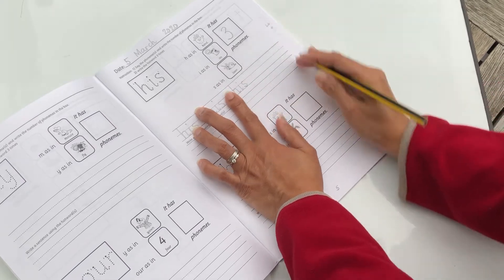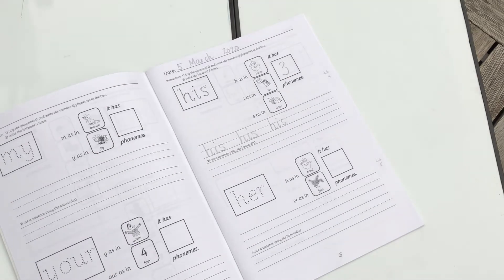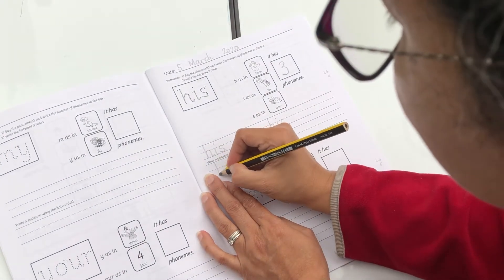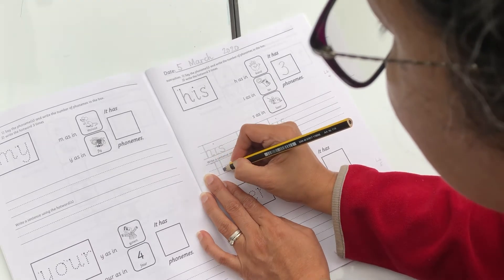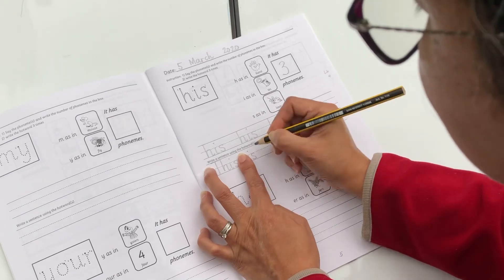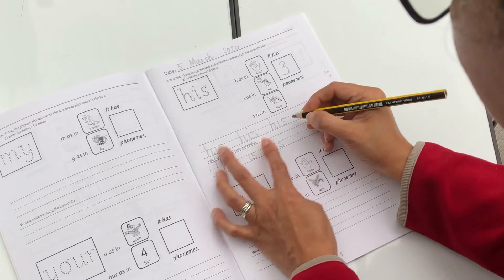And make a sentence or form a sentence. His. I can say, this is his ball. So I can point, this is his ball. This is his ball.